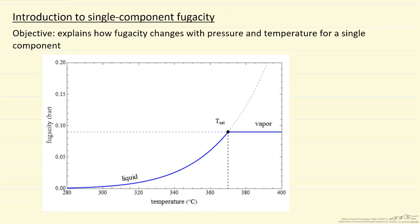Here we're going to look at plots of fugacity as a function of temperature and as a function of pressure. So first let's look at constant pressure, and the pressure for this figure is 0.90 bar.